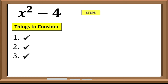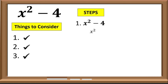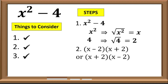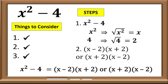We will follow the steps. Step 1: solve the principal square root of the first and second term. The principal square root of x² is x, and the principal square root of 4 is 2. Step 2: follow the given format. So the factors of x² − 4 are either (x − 2)(x + 2) or (x + 2)(x − 2).